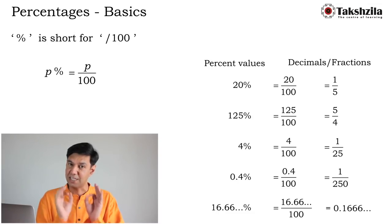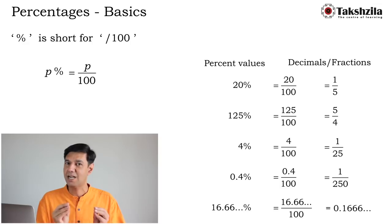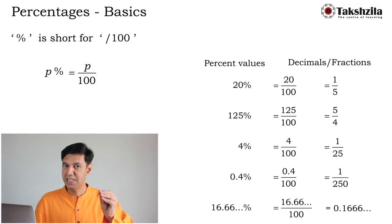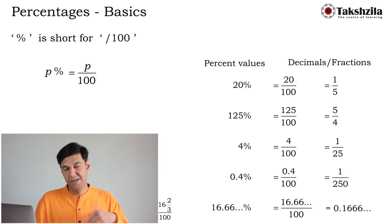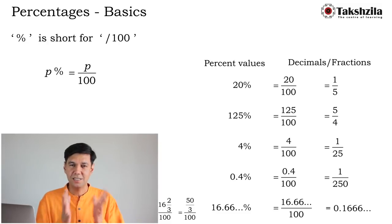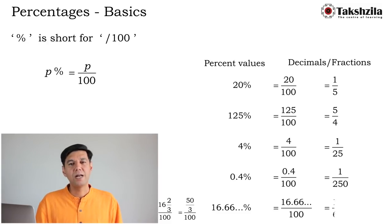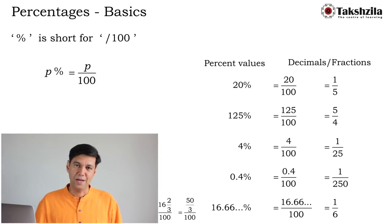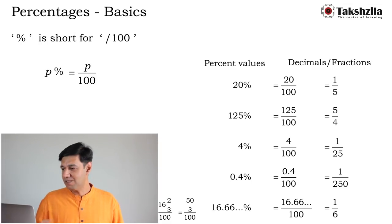To calculate 16.66...% exactly, represent 16.66... as the mixed fraction 16⅔, which equals 50/3. Then (50/3) ÷ 100 = 50/300 = 1/6. So 16.66...% as a fraction is exactly 1/6. Any percentage value can be converted to a decimal or fraction by replacing % with ÷100.